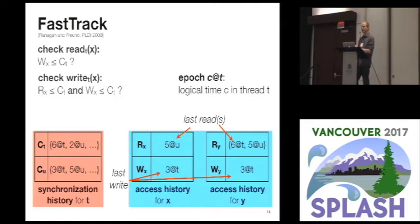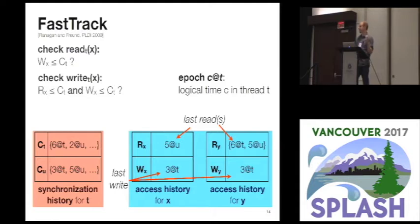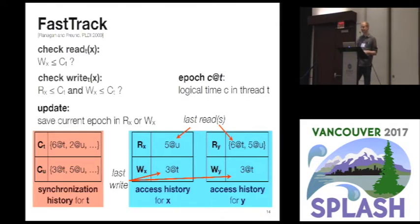The details of how we do checking in FastTrack I'm going to gloss over, but the key thing to understand is: when we're checking a read operation, we need to ensure it is well-ordered with respect to the last write. When we're checking a write operation, we need to ensure it is well-ordered with respect to all of the last reads in the access history as well as the last write. Then if we have a data-race-free access, we update the access history by recording either a new last read or a new last write.